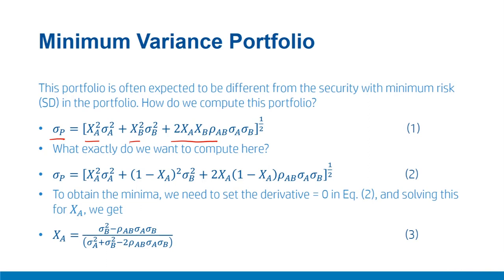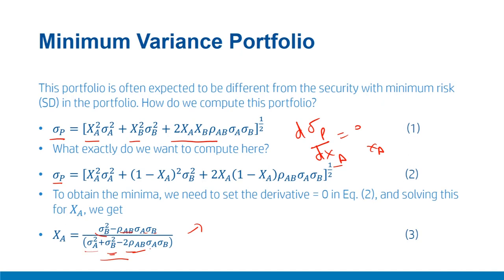This portfolio is often expected to be different from the security with minimum risk. We already know the generic formula for portfolio risk. For the two-security case: sigma p = (xa² sigma_a² + sigma_b²)^(1/2). To compute the minima, we differentiate sigma p with respect to xa and set the derivative equal to zero. Solving for xa gives: xa = (sigma_b² − rho_ab × sigma_a × sigma_b) / (sigma_a² + sigma_b² − 2 × rho_ab × sigma_a × sigma_b), where rho_ab is the correlation between securities a and b.